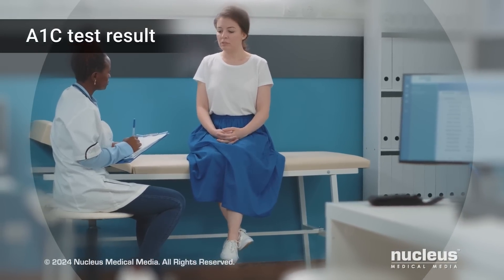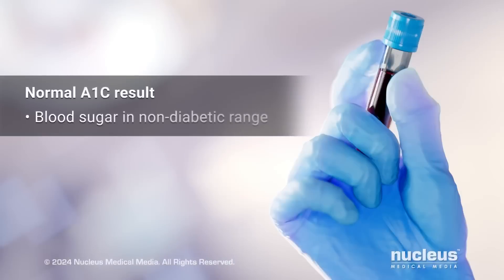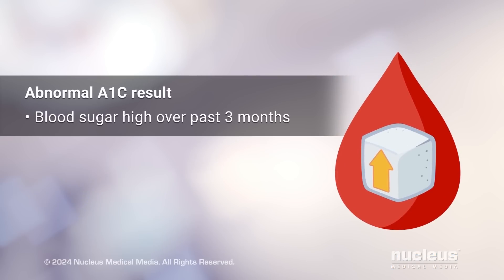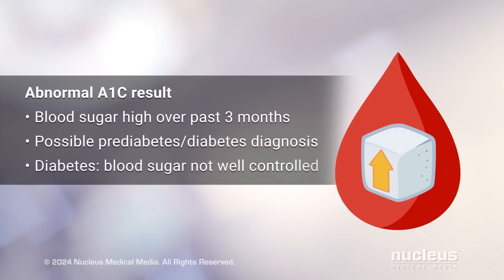Your A1c test result may include a chart that shows estimated average blood glucose range based on A1c numbers. A normal A1c result means your blood sugar level is in the non-diabetic range, or an A1c result may be considered normal for you even if your blood sugar is slightly outside the non-diabetic range. This may happen because of your age or medical conditions you have, such as diabetes. An abnormally high A1c test result means your blood sugar has been too high over the past three months. You may be diagnosed with prediabetes or diabetes if you haven't already been told you have it. Or if you're living with diabetes, an abnormal result means your blood sugar is not well controlled.